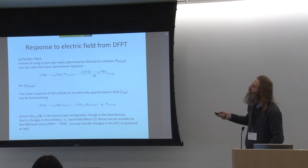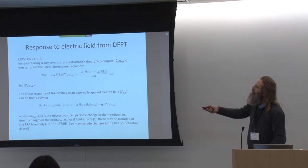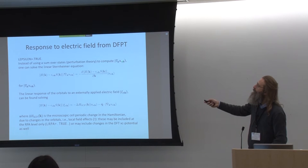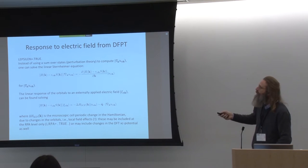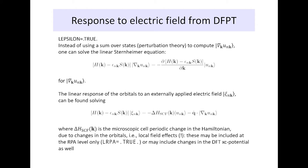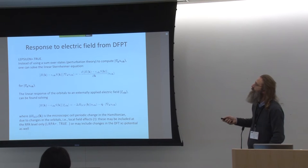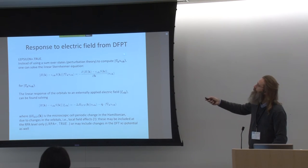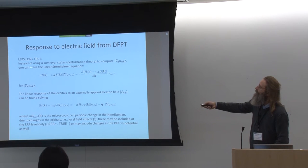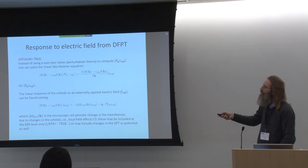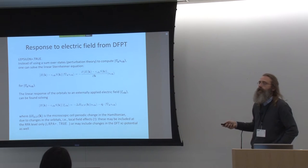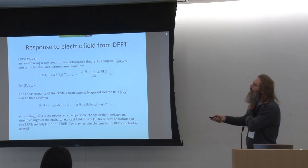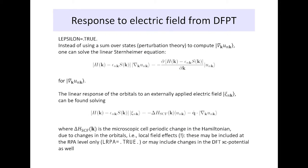Using density functional perturbation theory: the thing we have to compute is the derivative of the cell-periodic part of our Bloch functions with respect to the Bloch wave vector. In the case of DFPT, we don't use the sum over empty states. Instead of first-order perturbation theory with a sum over empty states, we solve a linear Sternheimer equation. The number of states for which we have to do this is of the order of the occupied states — that's a nice thing from DFPT. We solve for this particular quantity and use it to express our perturbation.